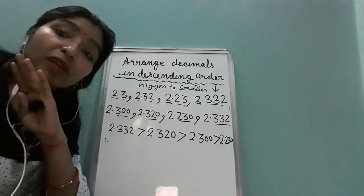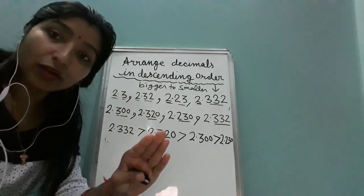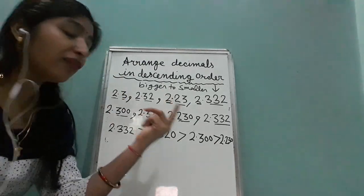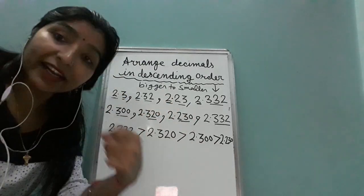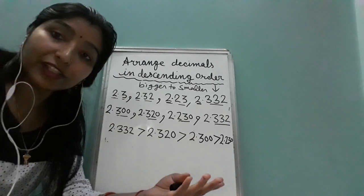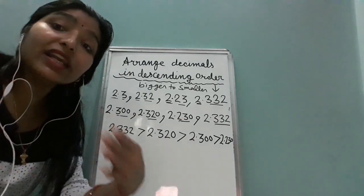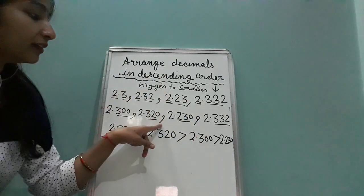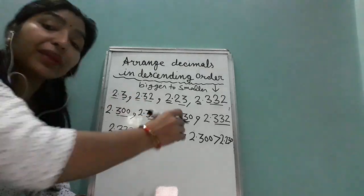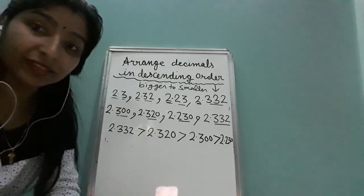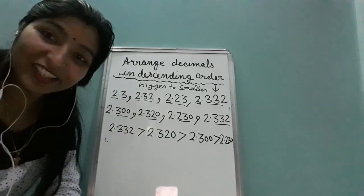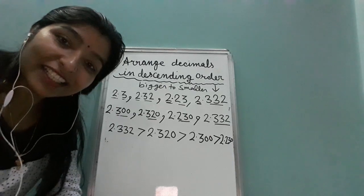My first step is compare the whole part. Second step is check whether they are like decimals or unlike — if they are unlike, make them like. And then compare the decimal part. I hope it is clear to you. Have a nice day.